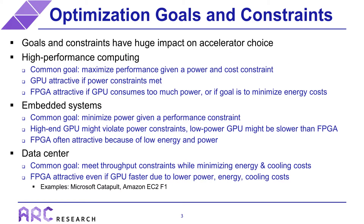Optimization goals and constraints are a very important consideration that has a huge impact on the choice of accelerator. Before doing any exploration, I would recommend first deciding what you want to optimize — for example, performance, power, energy, some combination of those — and any constraints that must be met. For example, you might need to use less than 200 watts of power, or you must achieve a throughput of 30 frames per second.